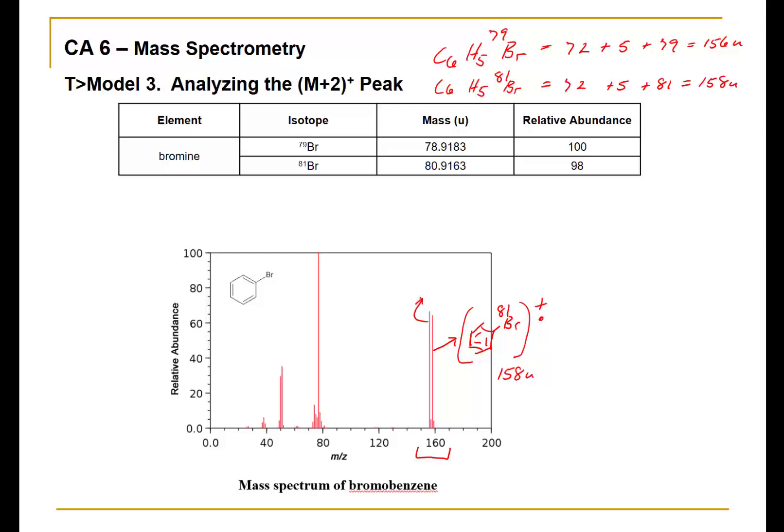The second peak corresponds to our molecular ion peak with bromine-79. Put brackets around it, positive charge, dot. This corresponds to 156 atomic mass units.